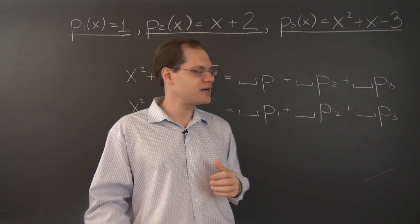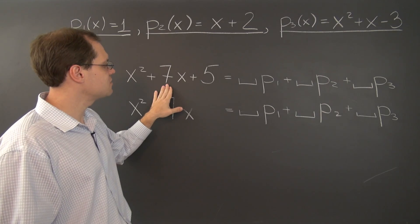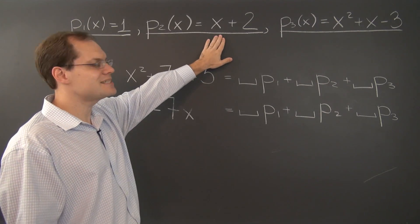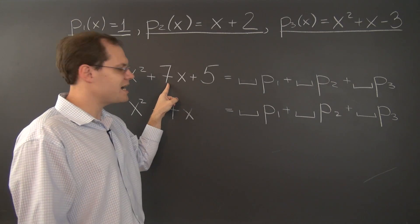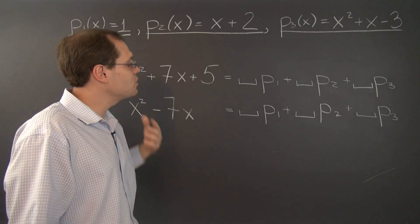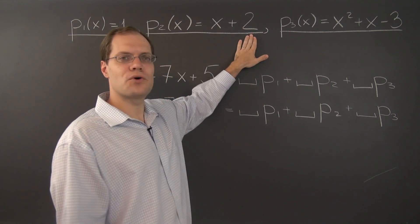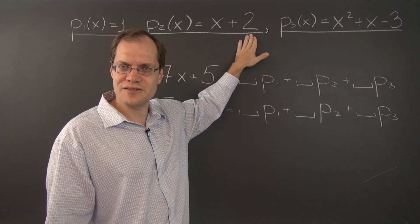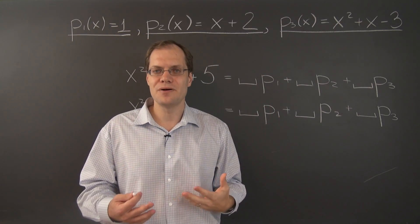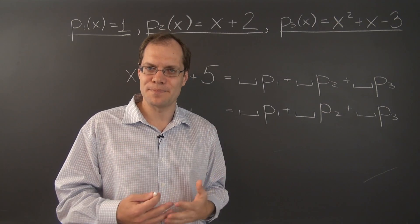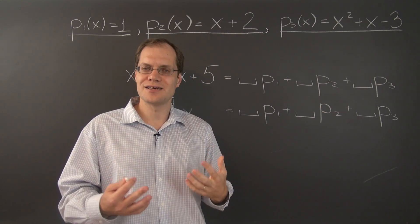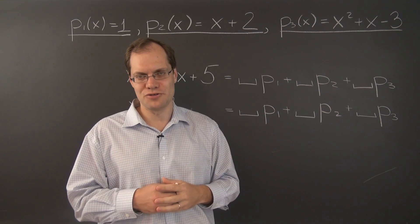we will presumably try to match the x-coefficient. So we would have to take 7 of this polynomial, which would indeed match the 7, but it will also give us an extra 14 in the free coefficient. And that will mess up what we achieved in the first step. So the whole process will be derailed. So this is not the right approach.